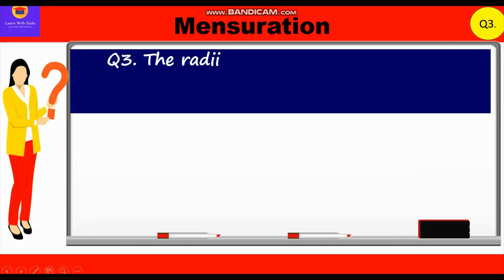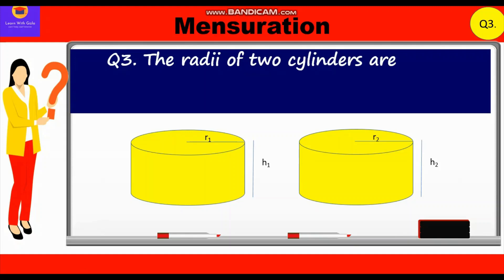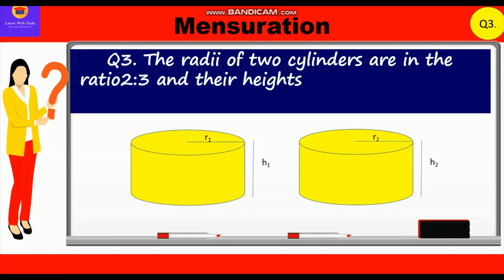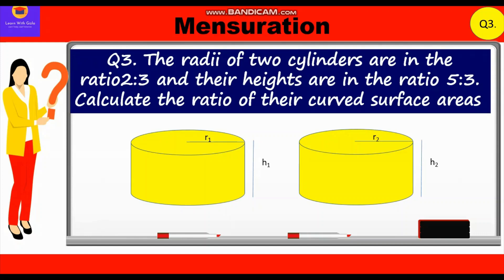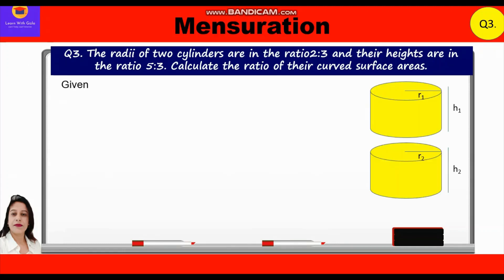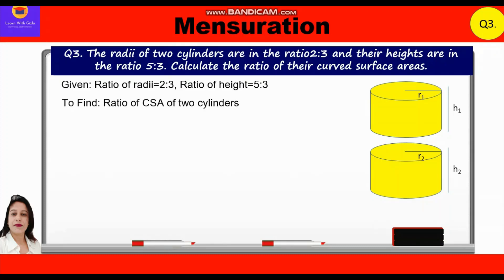Now let's take up the third question. The radii of two cylinders are in the ratio 2:3 and their heights are in the ratio 5:3. Calculate the ratio of their curved surface areas. Given: ratio of radii = 2:3, ratio of heights = 5:3, and we have to find the ratio of the curved surface areas.